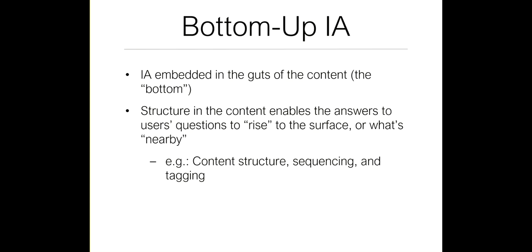Bottom-up information architecture, by contrast, is embedded in the actual content itself — the 'bottom.' This is essentially what you saw with the Purple Polar Bear book page on Amazon. Someone has navigated down to a specific details page, and the structure and content enable answers to users' questions to rise to the surface, providing information on what's nearby. In the case of the Purple Polar Bear book, it surfaced other books in the same field you might be interested in — not a hierarchical design, but one that says 'here are things related and adjacent to your needs.'